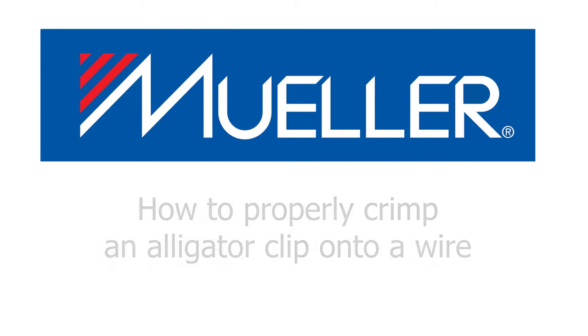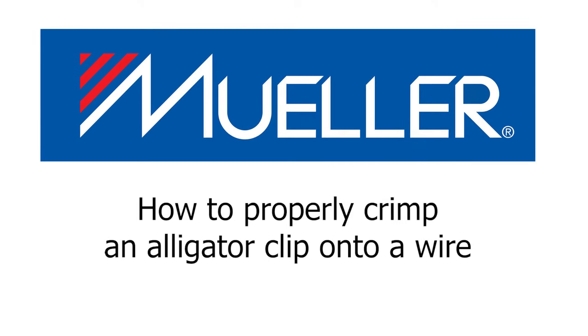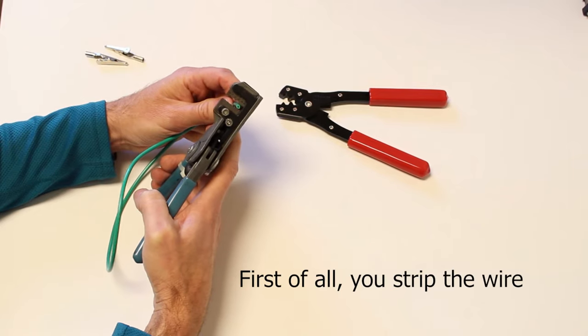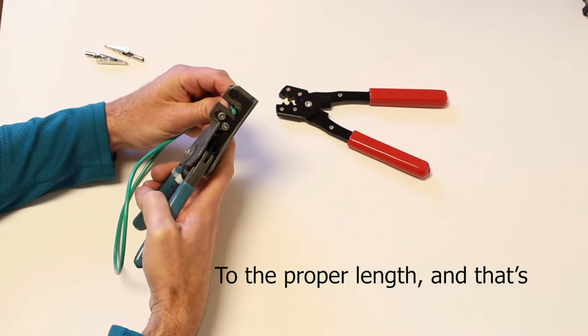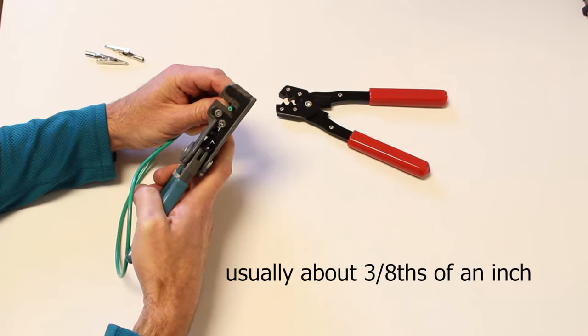This is how you properly crimp an alligator clip to a wire. First of all, you strip the wire to the proper length, and that's usually about three-eighths of an inch.